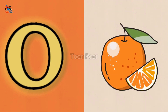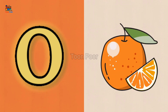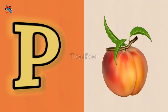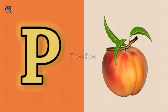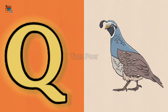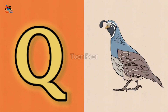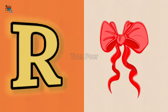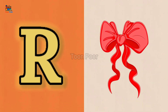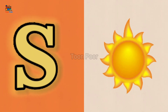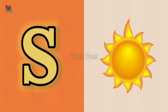O for orange, P for peach, Q for quill, R for ribbon, S for sun.